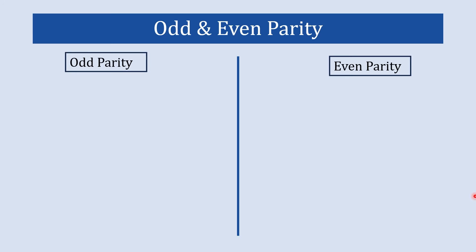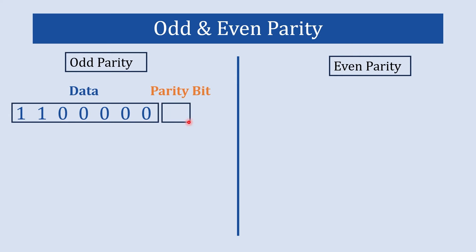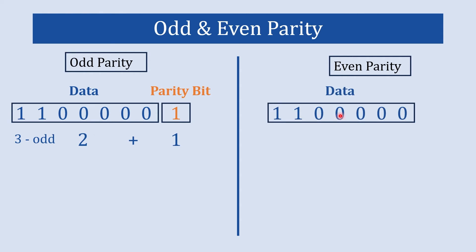Now let's see a combined example of odd and even parity so you can clearly understand the difference. Take some data with two ones. For odd parity we add one as the parity bit — two plus one gives us three, an odd number. For even parity on the same data, we put zero as the parity bit — two plus zero gives us two, an even number. So for the same data, we added one as the parity bit for odd parity and zero for even parity.